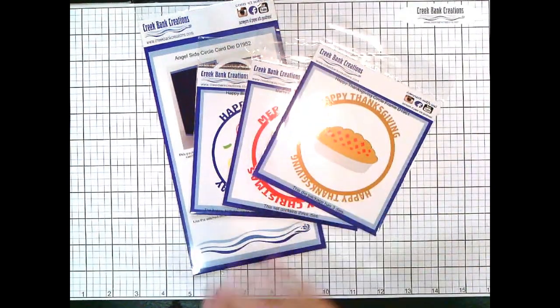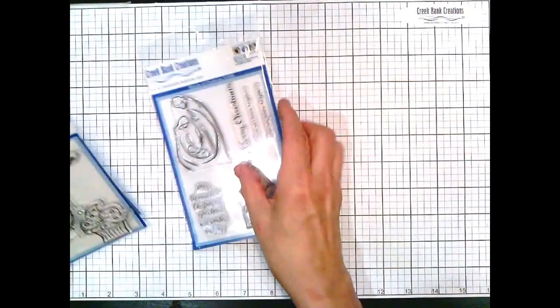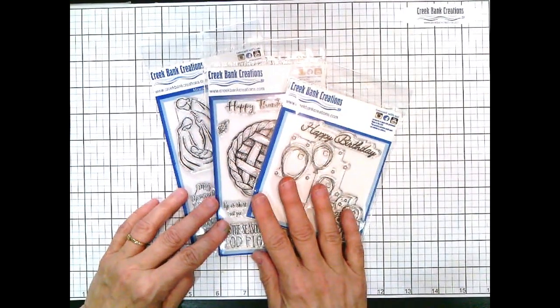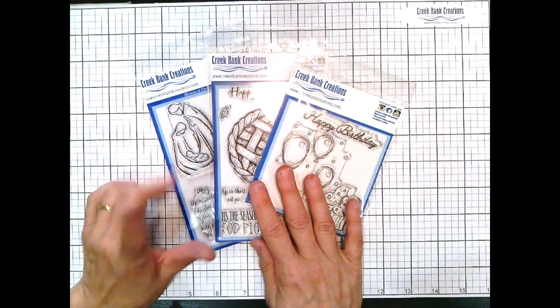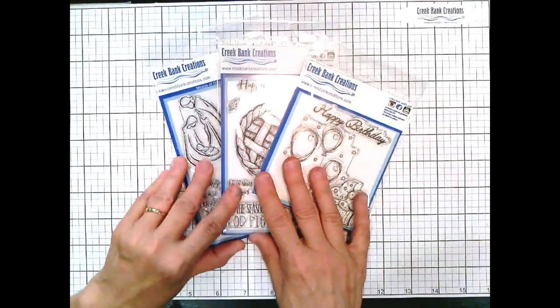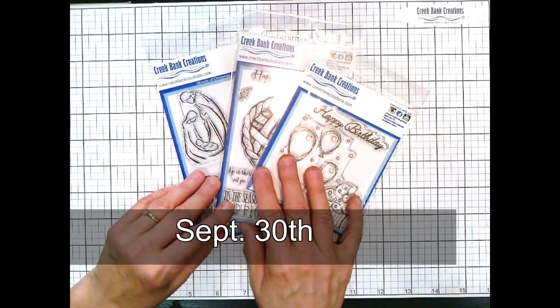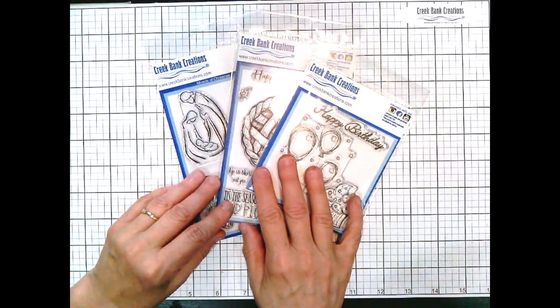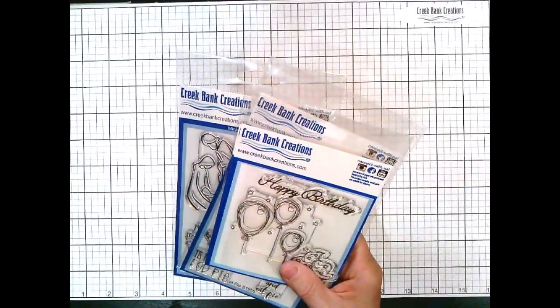So you're basically getting one die free and we're going to ship it to you for free. Our stamp bundle that you'll find on our website - normally this package would cost you $40 plus freight. If you want all three of the stamps, you can save $5. We'll sell these three sets to you online until September 30th for $35 and your freight is free.